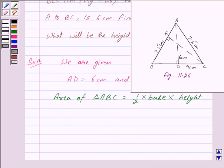Here we have BC as base and AD as height. So area of triangle ABC = 1/2 × BC × AD.